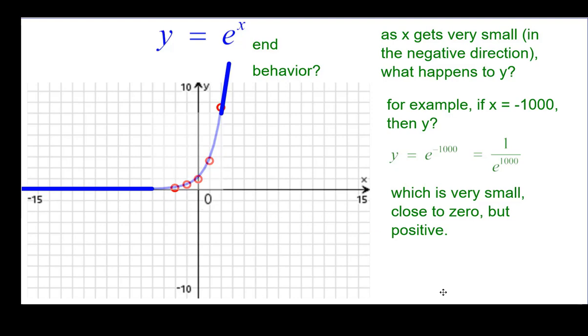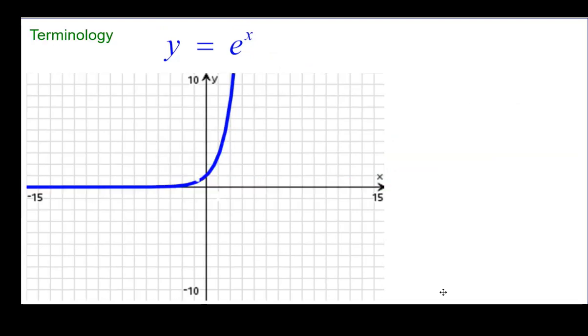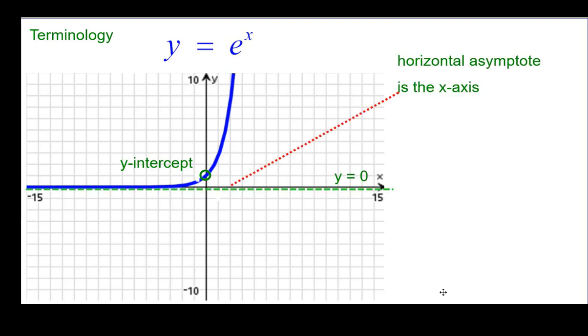And so we're going to say that the y-axis, then, is a horizontal boundary line. So the line y equals 0 is called an asymptote. The curve gets really close to it, but never actually touches it. Some terminology, we've got a y-intercept on it. And like we just mentioned, we also have a horizontal asymptote, the x-axis, the line y equals 0.